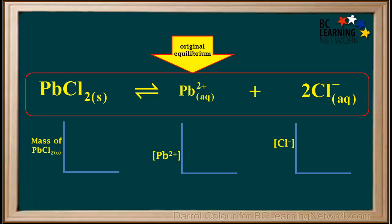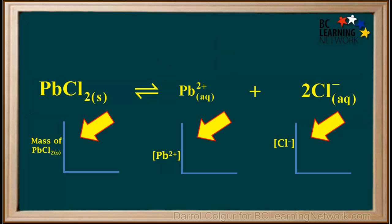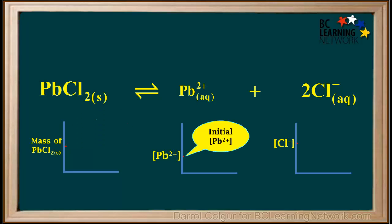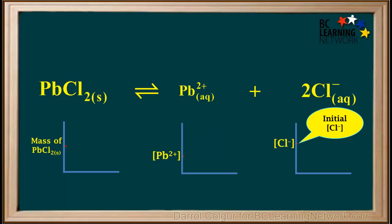We start back at the beginning with the original equilibrium before we added the sodium chloride. The graphs below will show what happens to the mass of PbCl₂ and the concentrations of the ions as we carry out the whole process. The initial mass of PbCl₂ is represented by the red dot on the left graph. The initial concentration of Pb²⁺ is represented by the red dot on the middle graph. And the initial concentration of Cl⁻ is represented by the red dot on the right graph.